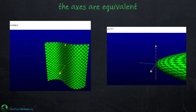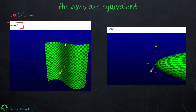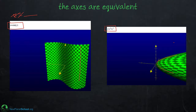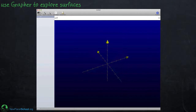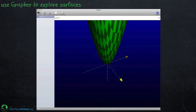Interestingly, the axes are equivalent. If you don't like the orientation, you can erase 'z equals' and type it yourself. For example, x equals sine(y) gives a sine wave that's constant in z but varies in y. You can also do y equals — for example, y equals x² + z² gives a parabola opening along the y-axis instead of the z-axis. So keep in mind that the axes are equivalent in Mac Grapher.